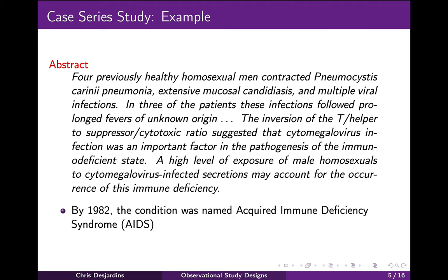Publication of observations from a case series may lead to research questions from more rigorously designed studies. For example, in 1981, Michael Gottlieb and his colleagues at the UCLA School of Medicine reported a rare form of pneumonia and unusual multiple viral infections in four previously healthy young men. Other similar case series studies followed, and by 1982 the condition was named Acquired Immune Deficiency Syndrome, now commonly known as AIDS.